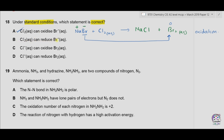Option B: chlorine aqueous can reduce bromide ions — this is incorrect because Br⁻ is being oxidized, not reduced. Option C: chloride ions can oxidize Br₂ — bromine is less reactive than chlorine, so chloride cannot displace bromine; the reaction will not occur, so neither oxidation nor reduction takes place. The correct option is A.